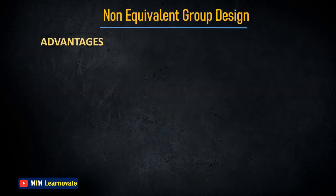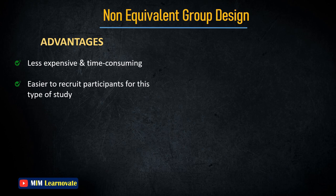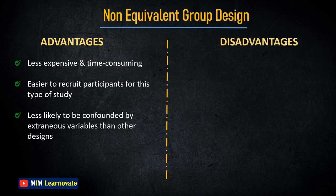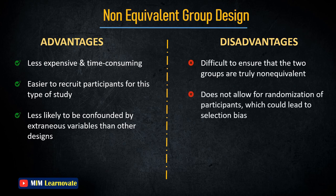Advantages of Non-Equivalent Group Design: it is less expensive and time-consuming than other designs, easy to recruit participants, and less likely to be confounded by extraneous variables. Disadvantages: it can be difficult to ensure that the two groups are truly non-equivalent, and this design does not allow for randomization of participants, which could lead to selection bias.